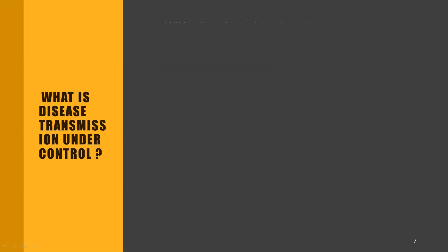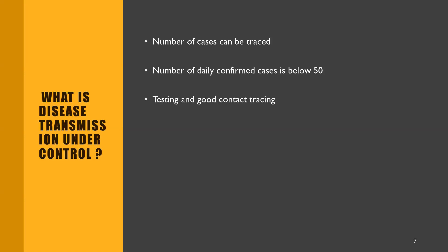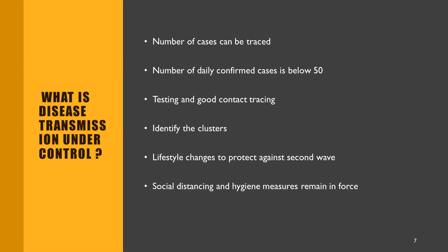What does 'disease transmission under control' really mean? It means each and every case can be traced, the number of daily confirmed cases is less than 50, there is good testing and contact tracing, clusters can be identified, lifestyle changes are in place to protect against a second wave, and strong social distancing and hygiene measures remain in force.